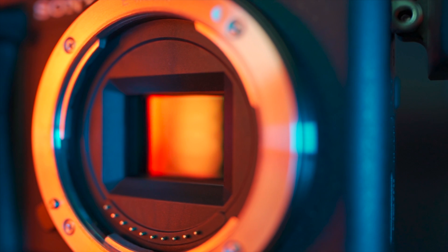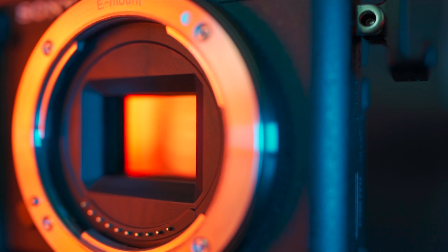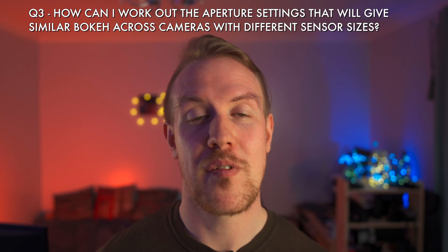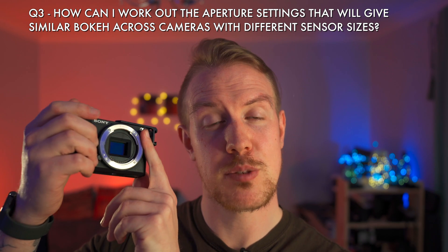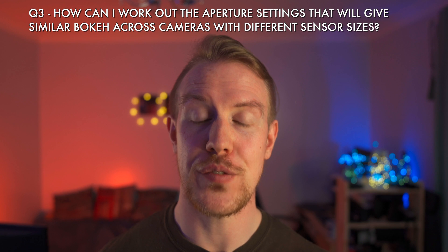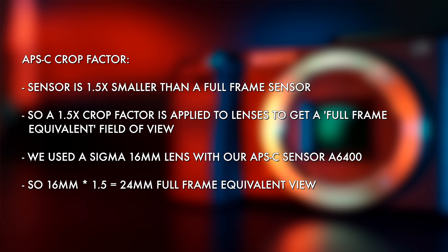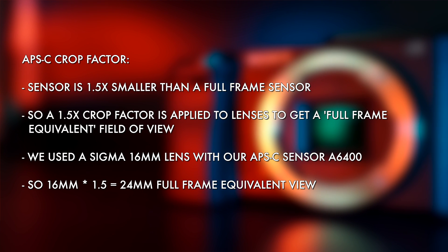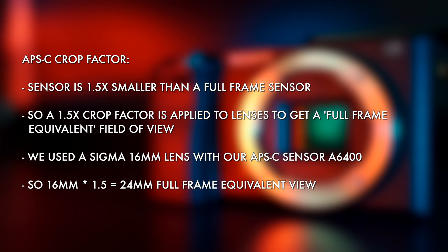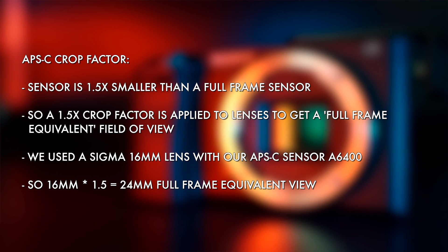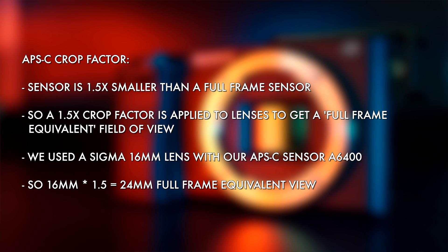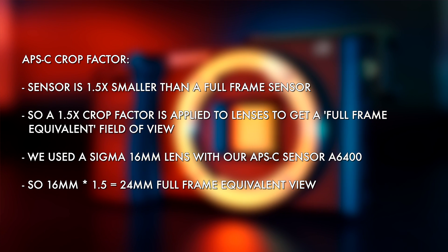That is because making things like focal length equivalent across cameras with different sensor sizes means you need to consider crop factor, which conveniently helps us answer our next question. Crop factor is the reason you need to multiply the focal length on smaller sensor cameras to get a full frame equivalent field of view. We're going to keep it light touch and on a need-to-know basis. The 16mm Sigma f1.4 we've been using in our testing pairs with the APS-C crop sensor of the A6400, so 16mm gets multiplied by 1.5 giving a 24mm full frame equivalent field of view.